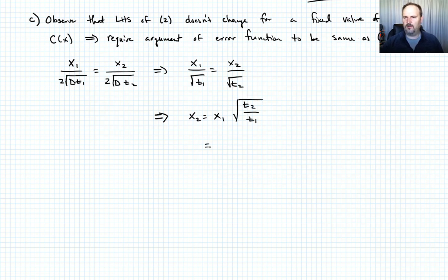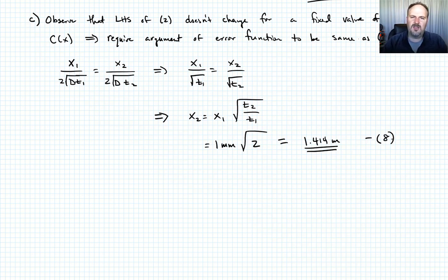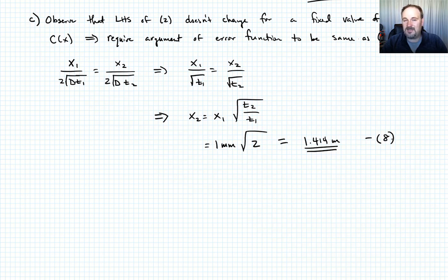x₁ was one millimeter, and since we doubled the time, the ratio t₂ over t₁ equals 2. So x₂ equals one millimeter times the square root of 2, giving a depth of 1.414 millimeters. That's equation 8. The takeaway is: when concentrations stay fixed, you don't need to evaluate the error function — just hold the argument constant and use these simple ratio arguments.